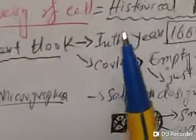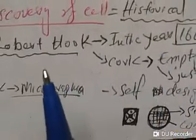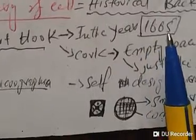Discovery of cell - let's look at the history. In the year of 1665, cell was discovered.